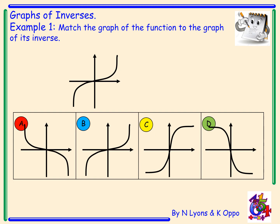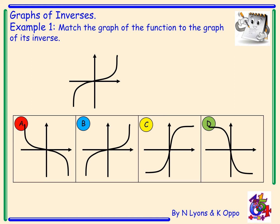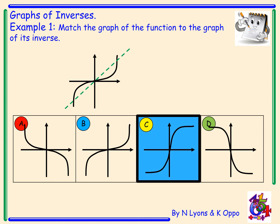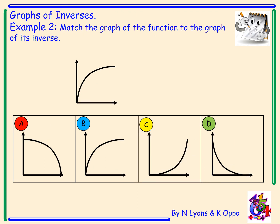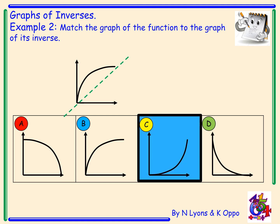Example one: match the graph of the function to the graph of its inverse. The first thing you should do is draw in your line of y equals x — this will help you identify what will happen when you reflect the graph over — and the answer here is c. Example two: again, we need to match the graph of the function to its inverse graph. Firstly, draw in the line y equals x, and comparing with a, b, c, d, we can see the answer is again c.